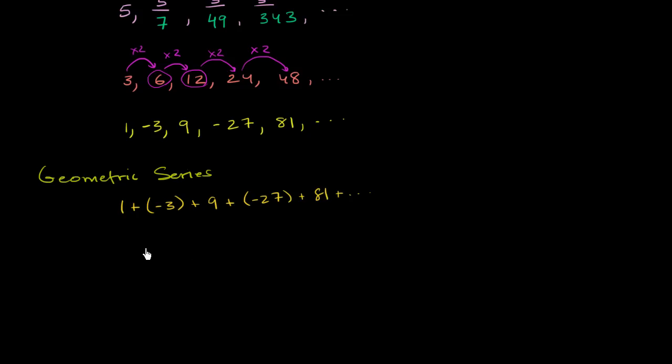and we were to go on and on and on, this would be a geometric series. And we could do it with this one up here just to really make it clear what we're doing. So if we said 3 plus 6 plus 12 plus 24 plus 48, this once again is a geometric series. Just the sum of a geometric sequence or a geometric progression.